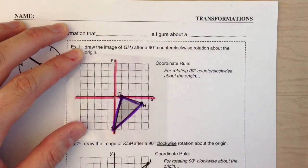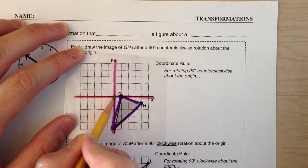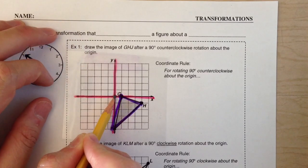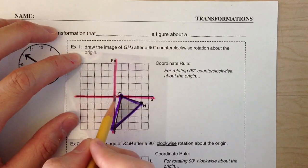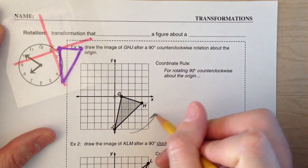Since we're rotating it about the origin, you're going to put your pencil point right on the origin and you're going to rotate it or spin or turn the tracing paper around. Now, we are moving it counterclockwise, which means we are rotating this way.